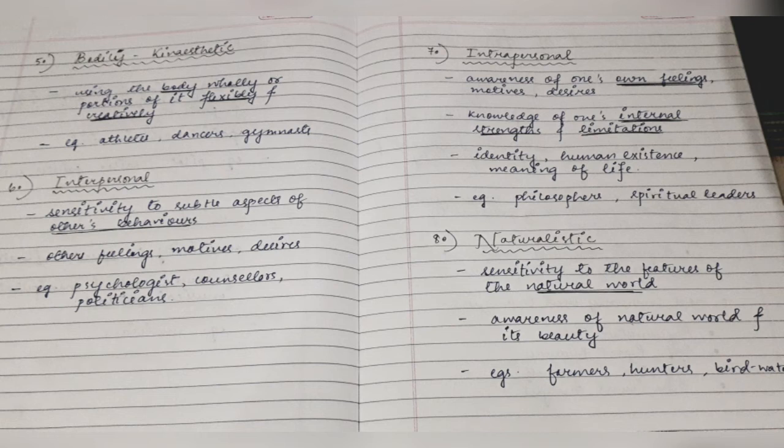People with high interpersonal intelligence have a sensitivity to the subtle aspects of others' behavior, feelings, motives, and desires. Examples of those with this type of intelligence include psychologists, counselors, and politicians.